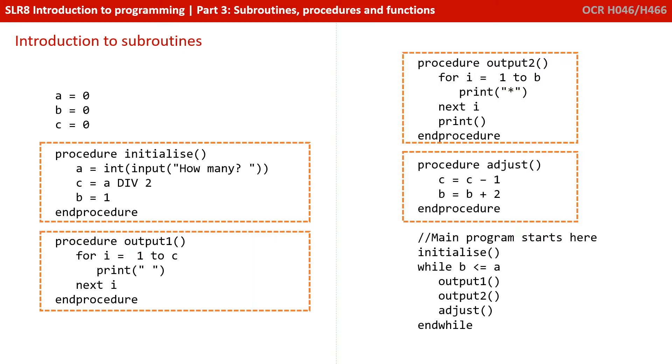So this program has four procedures called initialize, output one, output two, and adjust.